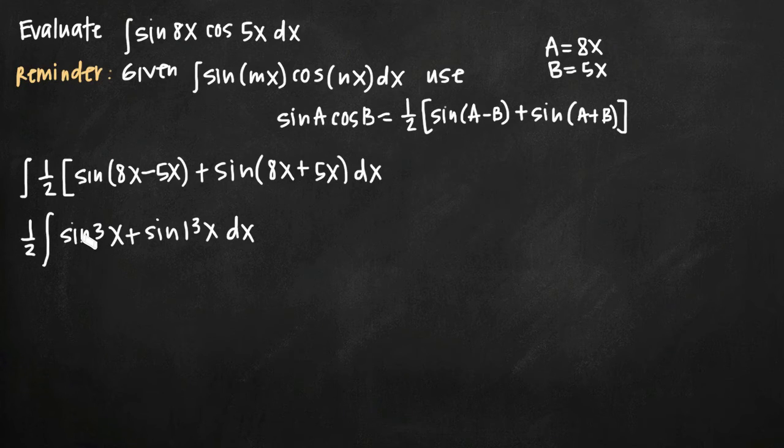We know that the integral of sine is negative cosine. So what we're going to get here when we evaluate, we'll get negative cosine of 3x, but then we have to use chain rule. And our outside function is sine of this inside function, which is 3x. So we took the integral of the outside function, the outside function being sine, the integral is negative cosine.